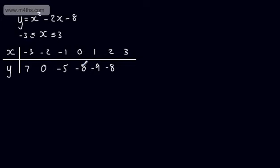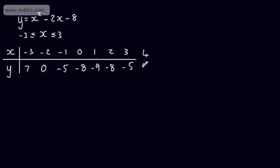At this stage you might notice the axis of symmetry — we're expecting the next value to be -5. For x = 3: 9 - 6 - 8 = -5. And if we just do x = 4: 16 - 8 - 8 = 0. You can see it's symmetric about this point, but this process is quite time consuming.